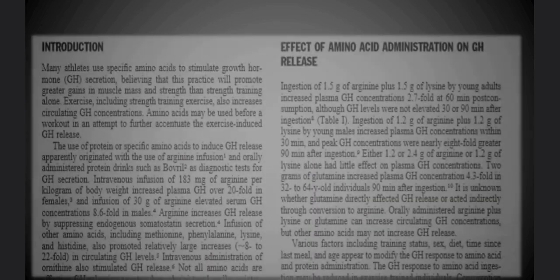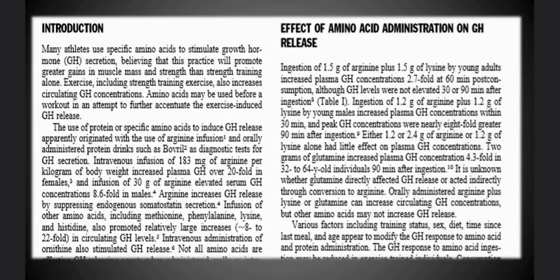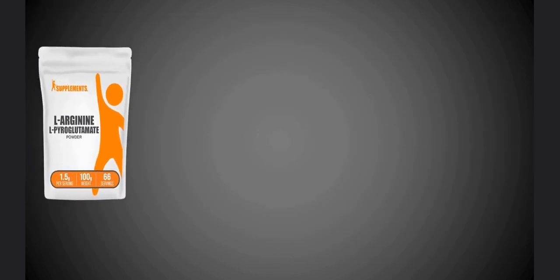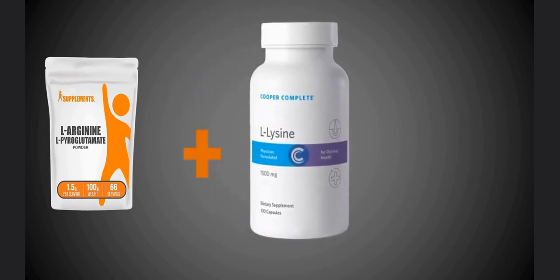When an experiment was conducted to assess the effect of amino acids on growth hormone release, it was ascertained that ingestion of 1.5 grams of arginine plus 1.5 grams of lysine by young adults increased plasma GH concentrations 2.7-fold approximately one hour from the time of consumption.